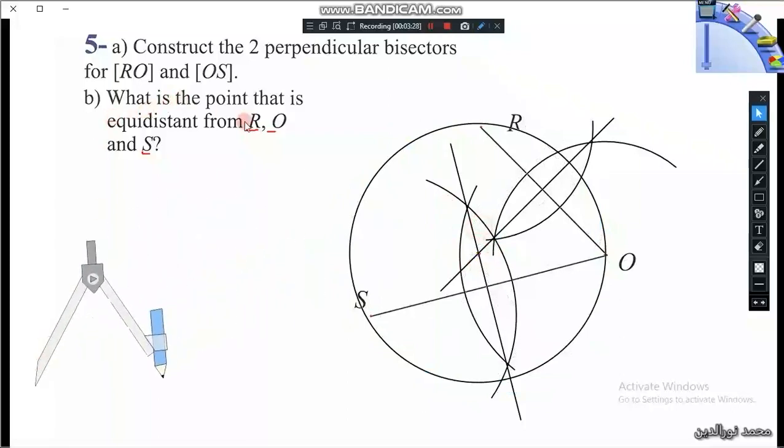So the point that's equidistant from the points R, O, and S is the point of intersection of the perpendicular bisectors of RO and OS.